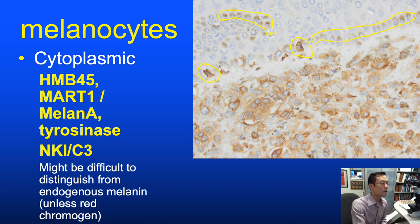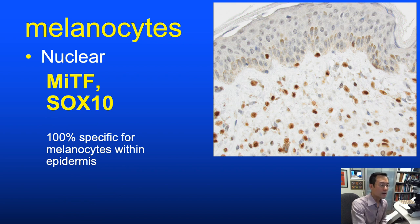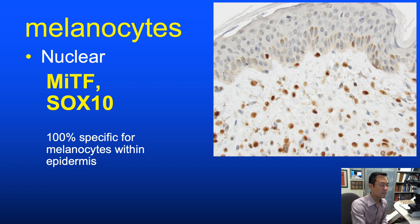You can also resolve the issue by using a nuclear stain rather than a cytoplasmic marker. Nuclear stains—MITF and SOX10—have largely supplanted Melan-A in my practice. Especially within the epidermis when evaluating junctional or in situ lesions, these nuclear stains are essentially 100% specific, as no other cells in the epidermis would stain positive.